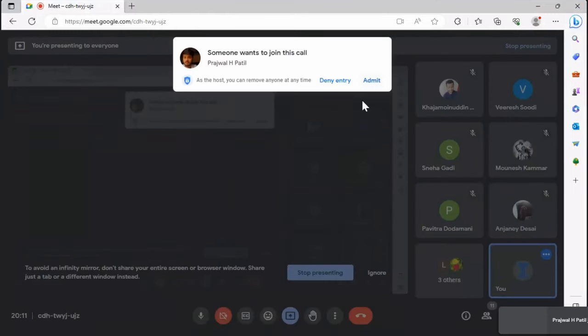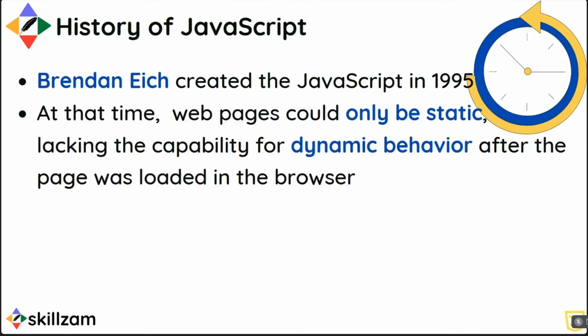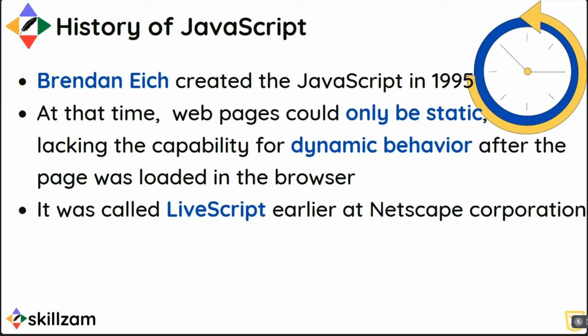Because of that missing interactivity, Brendan Eich — the creator of JavaScript — created it in the year 1995. At that time, web pages were only static and dynamic behavior was completely missing. They needed a programming language that could add interactivity and dynamic behavior to the web page.